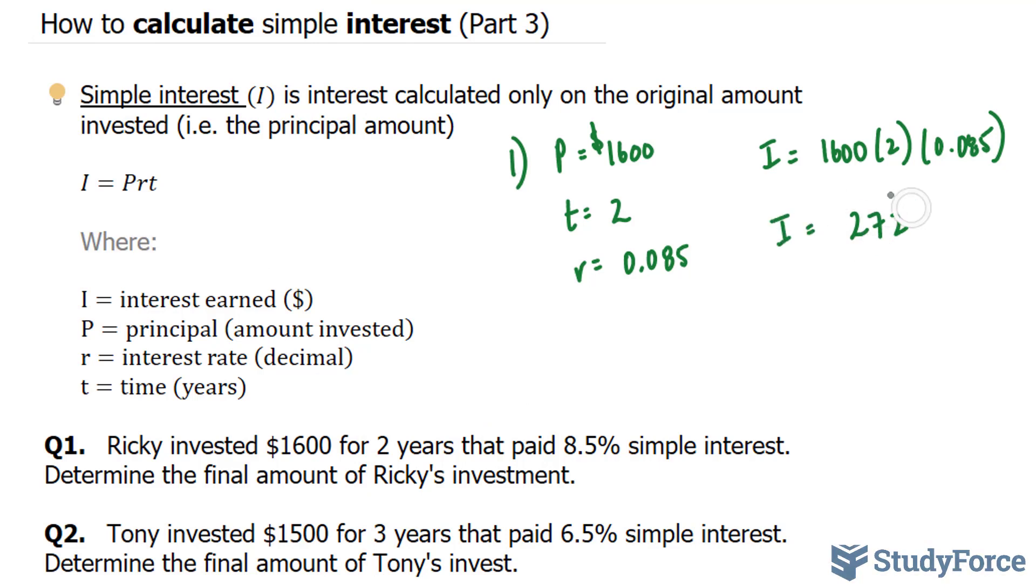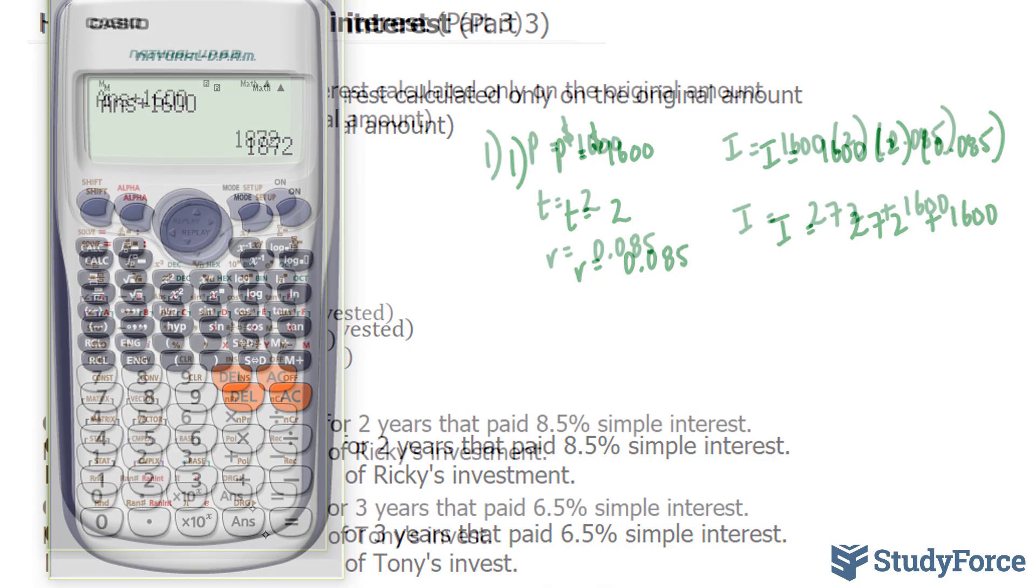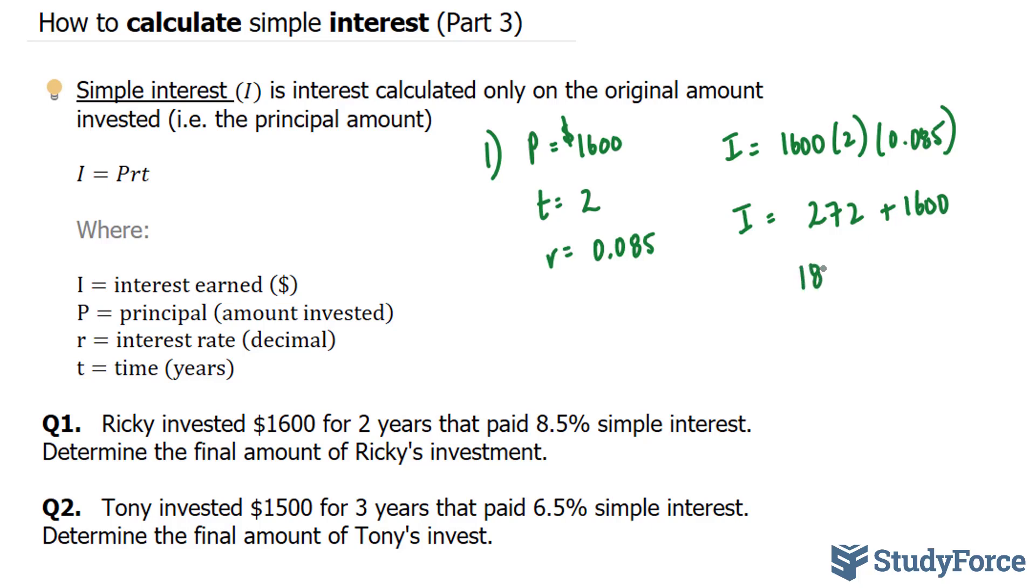Not so bad. But I'm going to add that now to 1,600. And we get 1,872 as our final. F is for final.